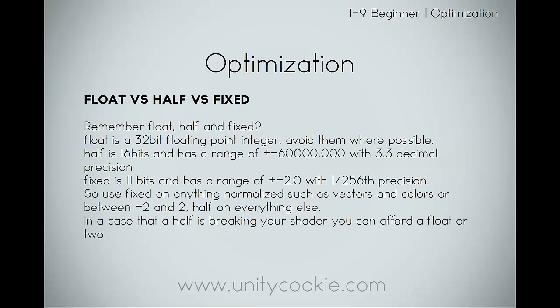Let's take a quick look at float versus half versus fixed. Float is a 32-bit floating point. Half is 16 bits and has a range of plus or minus 60,000 with 3.3 decimal points of precision. Fixed is only 11 bits and has a range of plus or minus 2 with 1/256 points of precision. We can use fixed on anything normalized, such as vectors and colours, or basically anything between negative 2 and 2. We can use half on everything else. In the case that half is breaking a shader or it's not looking right, you can afford a float or two.